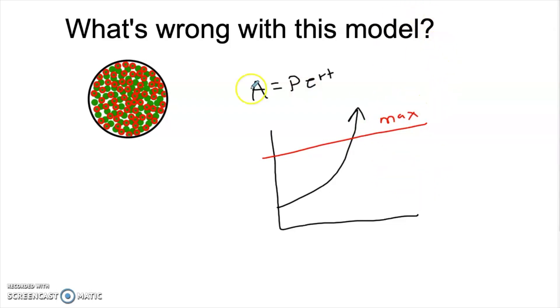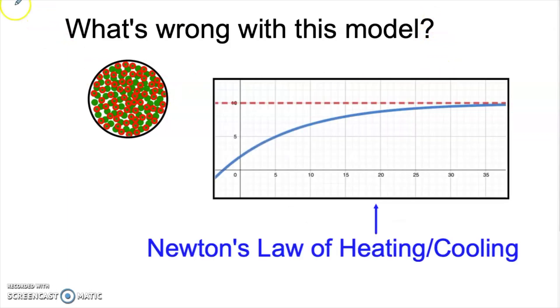Now the way we attempted to resolve this problem in the last video was with Newton's Law of Heating and Cooling. However, that was still an oversimplification. While Newton's Law of Heating and Cooling does address the idea of having a maximum amount, what we call the ambient or surrounding temperature typically in that model, so we can't grow past that amount, there's still something off with the rate of growth here.